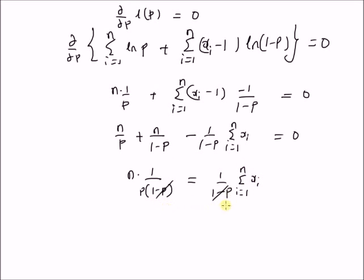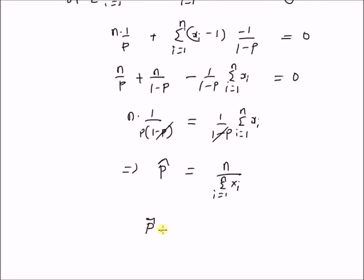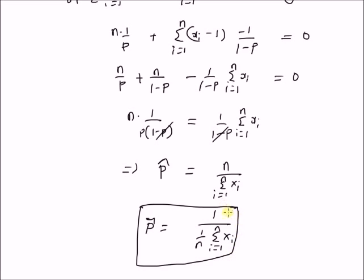Canceling (1 minus p) from both sides, the maximum likelihood estimate p̂ equals n divided by the summation from i=1 to n of x_i, or equivalently, p̂ equals 1 divided by (1/n) times the summation of x_i. Therefore, the maximum likelihood estimator of the parameter p is the inverse of the sample mean of the n observations. For a geometric distribution, the MLE of p is the inverse of the sample mean.